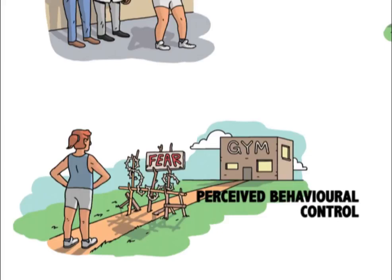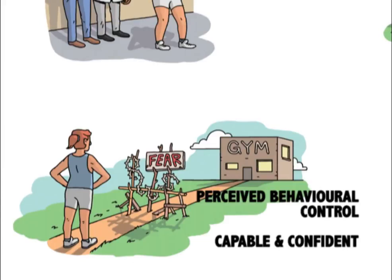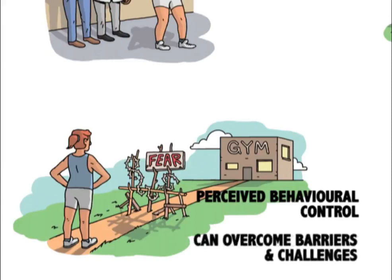In sport and exercise psychology, control is an important variable. Within the theory of planned behaviour, the extent to which a person feels capable and has confidence in their ability to execute the desired behaviour will play a central role in their intentions and actual behavioural outcomes. This could be likened to the perception that a person has the capabilities to overcome potential barriers and challenges.